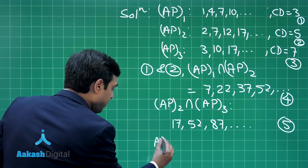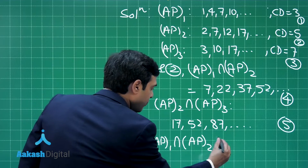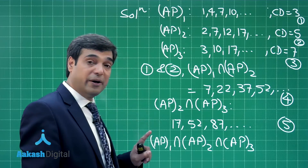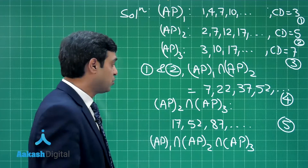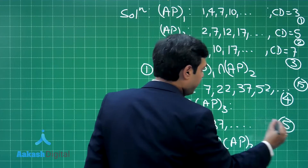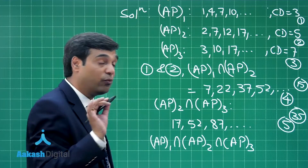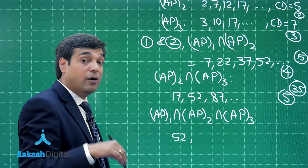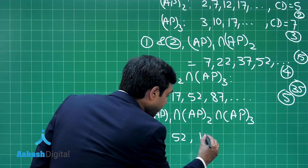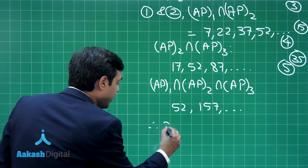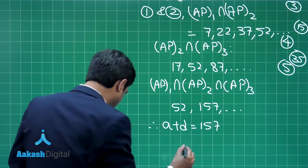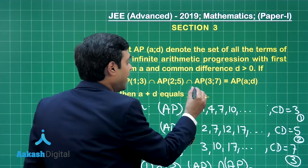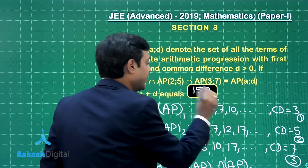Looking at AP(1,3) ∩ AP(2,5) ∩ AP(3,7), the first common term is 52, and the common difference is LCM(15, 35) = 105. So the resulting AP is 52, 157, ... and a + d = 52 + 105 = 157. The final answer for this question is 157.